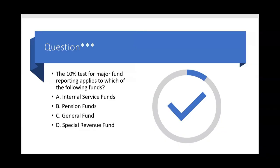The 10% test for major fund reporting applies to which of the following funds? A — internal service funds? No, because internal service funds can never be major funds, so you wouldn't waste your time doing a 10% test on one. B — pension funds? Pension funds are fiduciary funds, and fiduciary funds can never be a major fund, so we wouldn't waste our time doing a 10% test on a pension fund either.